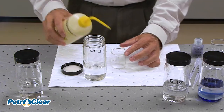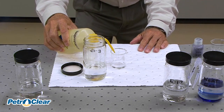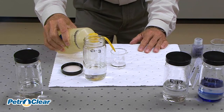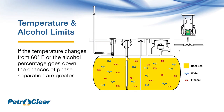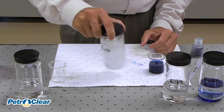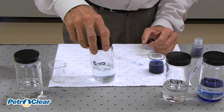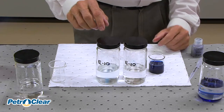We'll make another container of E10. Next we'll show that E10 will hold 0.5% water by volume at 60 degrees Fahrenheit. The 0.5% water tolerance is just for E10 — a 10% alcohol blend at 60 degrees. If you change the percentage of alcohol or the temperature, it will not hold 0.5%. So we'll add 0.5% water to the E10. You can see a slight variation in the color of the liquid, proving the E10 will hold the water in solution.